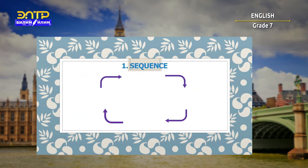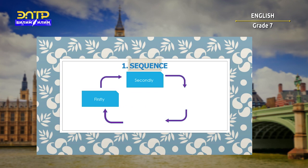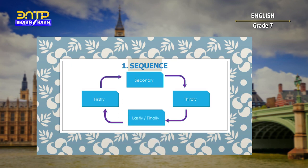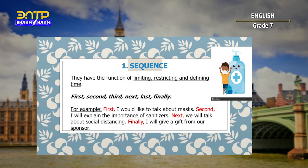Number one is sequence. Which words do we use? Firstly or first, secondly or second, thirdly or third, lastly or finally. They have the function of limiting, restricting, and defining time. The linking words are: first, second, third, next, last, finally.